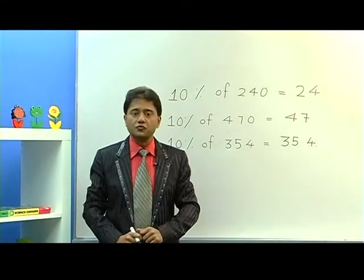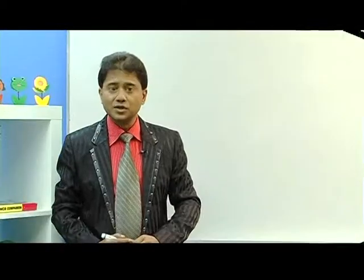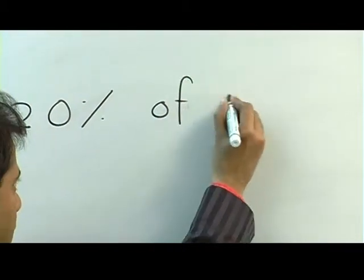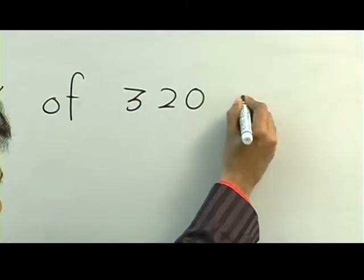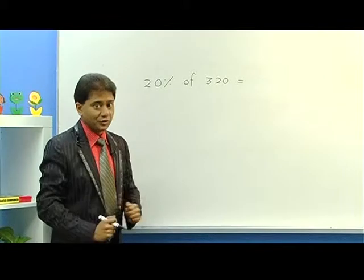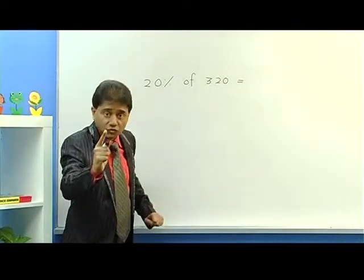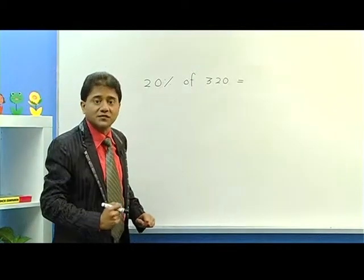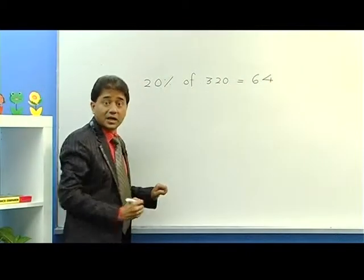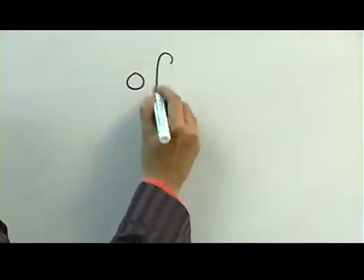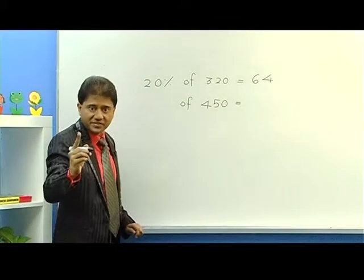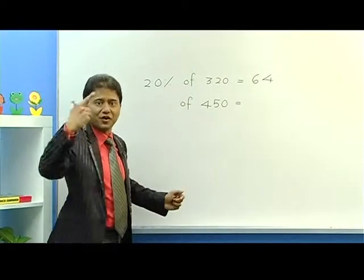Once you understand how to find 10%, I'm now going to show you how to find 20% of a number. For 20% of 320, first calculate 10% — just remove the zero to get 32. Now because you want 20%, just double it. Double of 32 is 64, so the answer is 64.